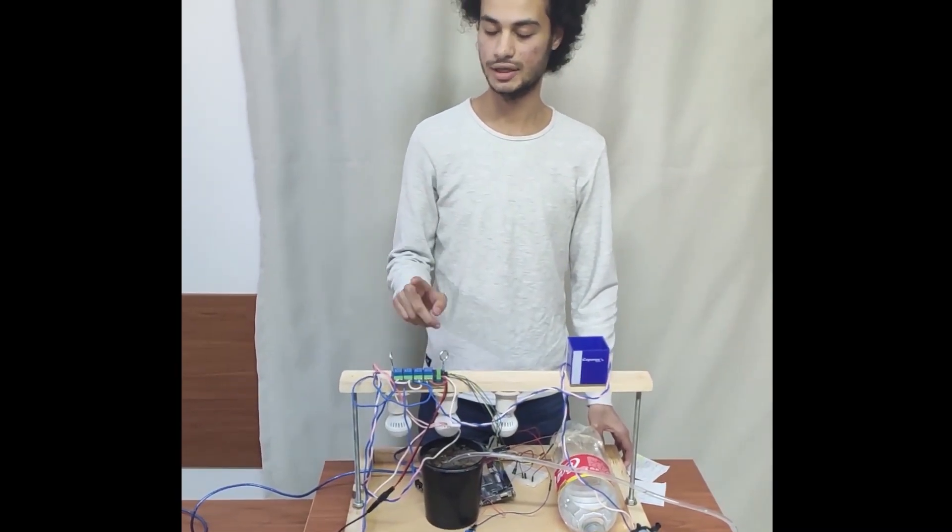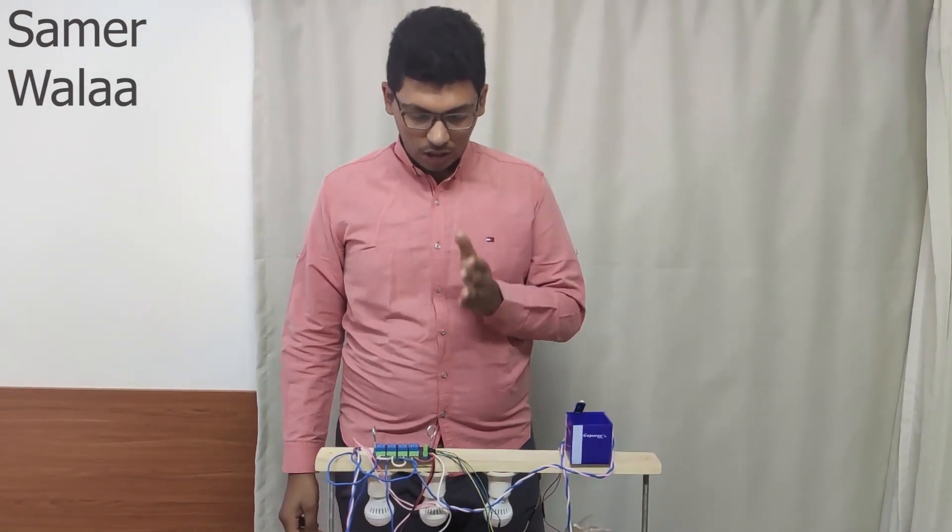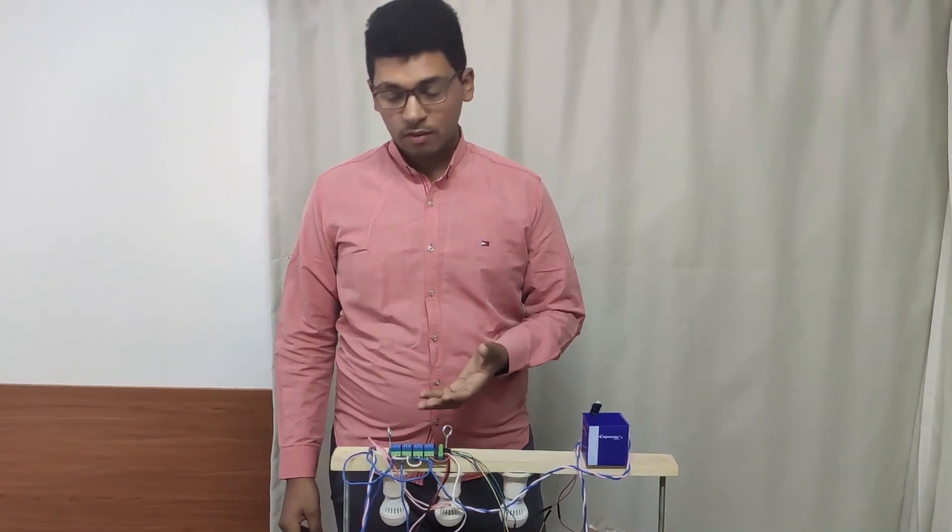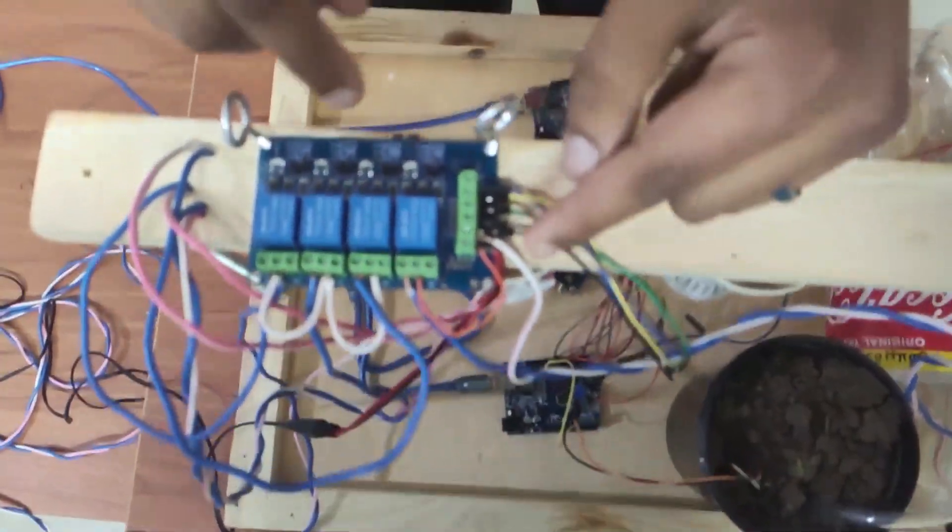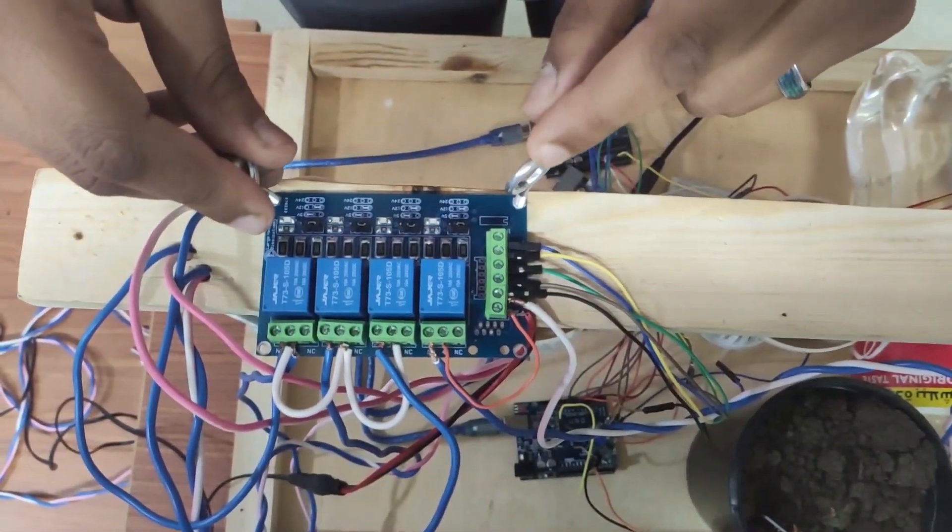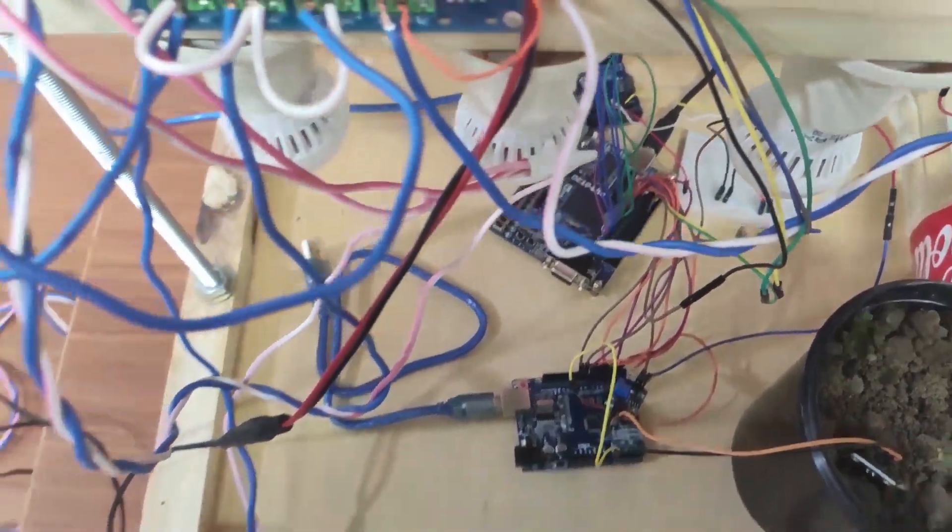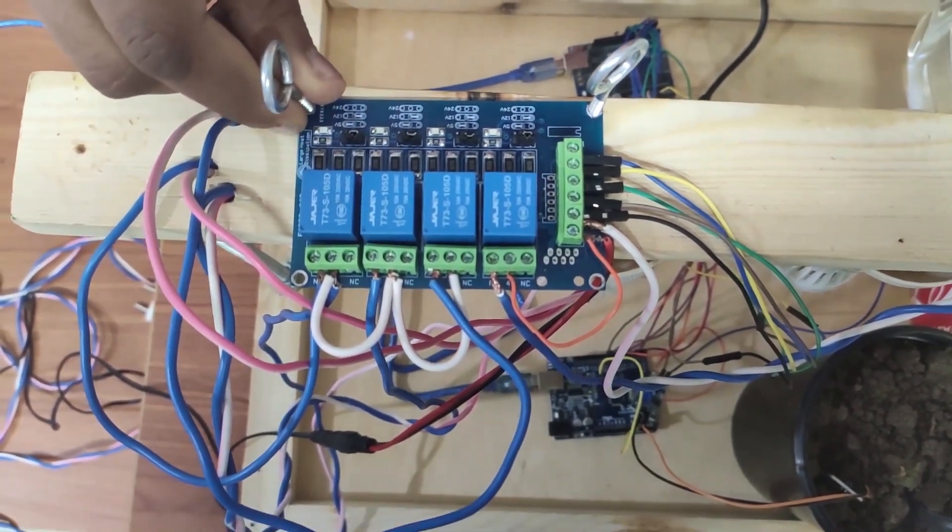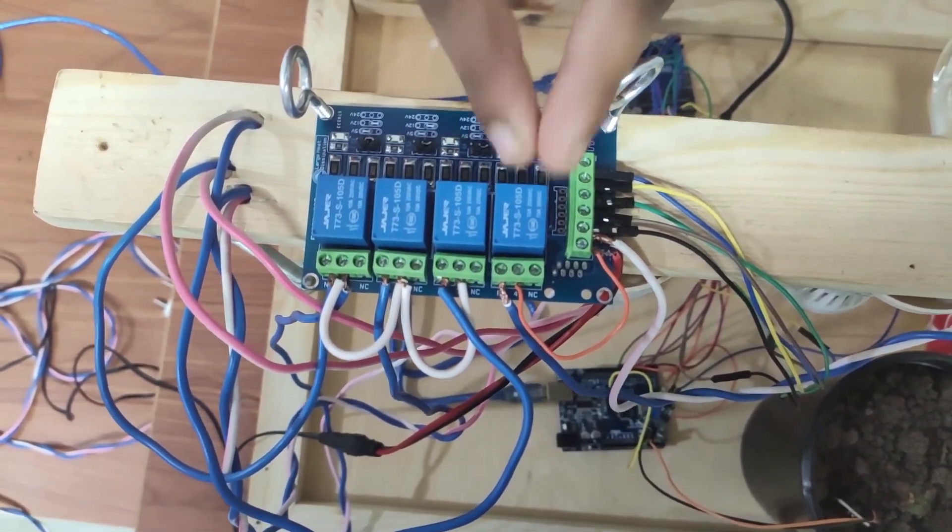Now my colleague will explain how the relay works. The relay is important because it's considered an automated switch which can control our four outputs. This relay works with 12 volts from this adapter. We connect the adapter with the VCC and ground of the relay. We also have the ground from the FPGA to close the circuit with the four controllers from the FPGA, which are the outputs of our project. These four controllers control these four channels.